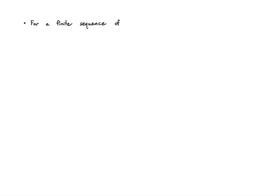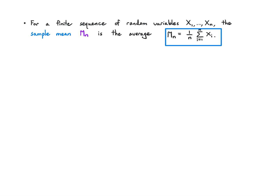We're also going to recall the idea of a sample mean. If I give you a finite sequence of random variables x1 up to xn, the sample mean is just their average — I take the sum and divide it by n. That's the sample mean m sub n.